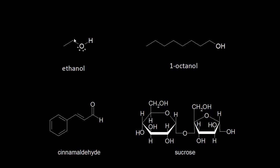This concept of like dissolves like is important because it allows you to predict whether or not a compound will be soluble in water. Let's look at several organic compounds and determine their water solubility. Starting with ethanol — ethanol has a polar oxygen-hydrogen bond. Oxygen is more electronegative than hydrogen, so oxygen withdraws some electron density, making the oxygen partially negative and leaving the hydrogen partially positive. When water comes along, the partially positive hydrogen on ethanol is attracted to the partially negative oxygen on water. This is an example of hydrogen bonding.